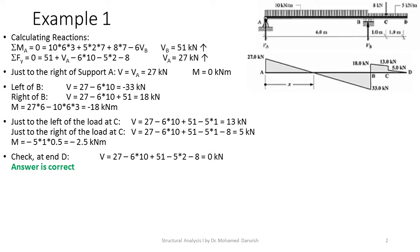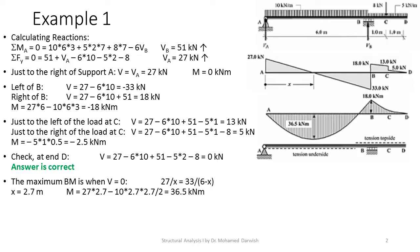Our check is to look at the end and verify that V must be zero at the end of a cantilever portion. Indeed: 27 minus 6 times 10 plus 51 minus 5 times 2 minus 8 equals zero kN. This confirms our calculations are correct.